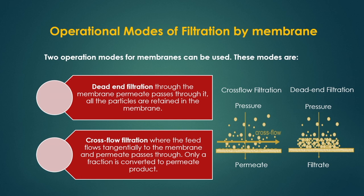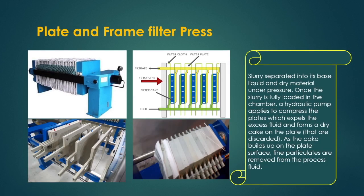There are generally two operational modes for membranes. The first is dead-end filtration, where the membrane permeate passes through and all particles are retained on the membrane. The second is cross-flow filtration, where the feed flows tangentially to the membrane and only a fraction of the flow passes through the membrane as permeate product. The plate and frame filter press is one special design for separation based on the dead-end operational mode.